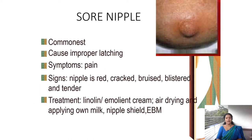The next condition is sore nipple. This is the most common condition and it commonly occurs due to the improper attachment of the baby to the nipples, or improper latching. The symptoms include pain — the nipple will be red in color, you can see cracks, the area will be bruised, blisters may also form, and there will be tenderness.